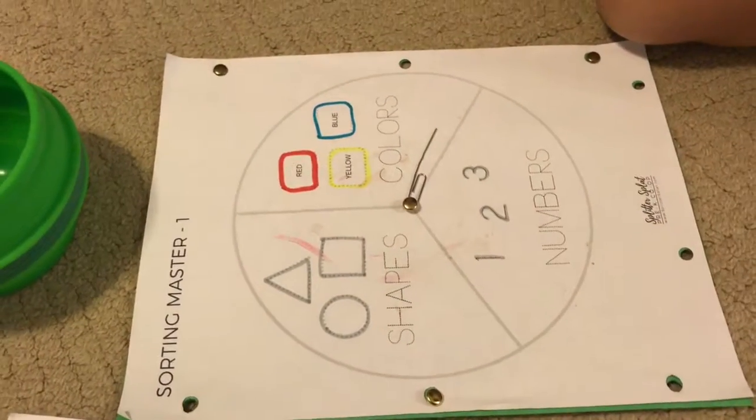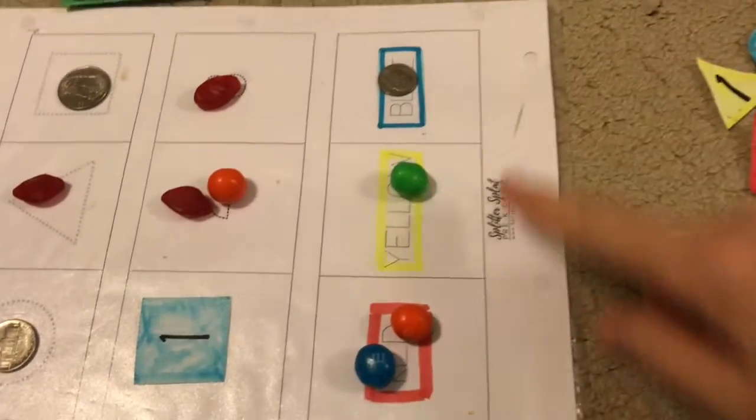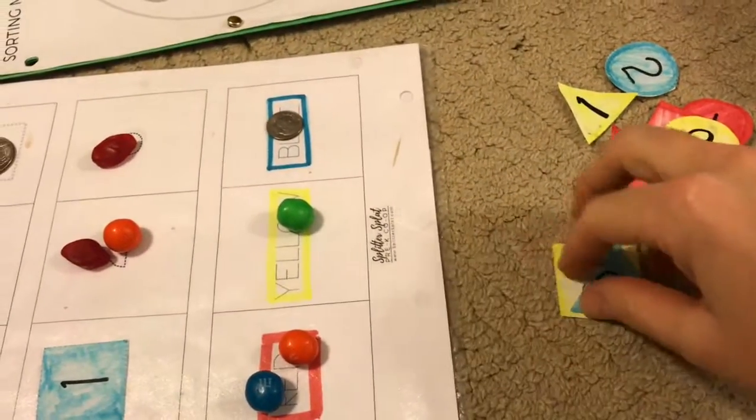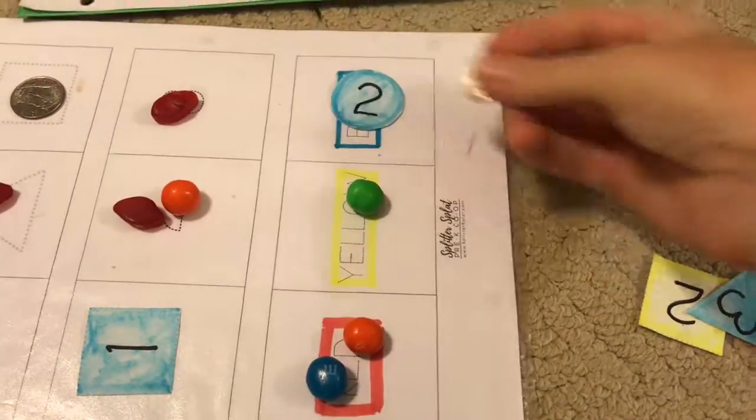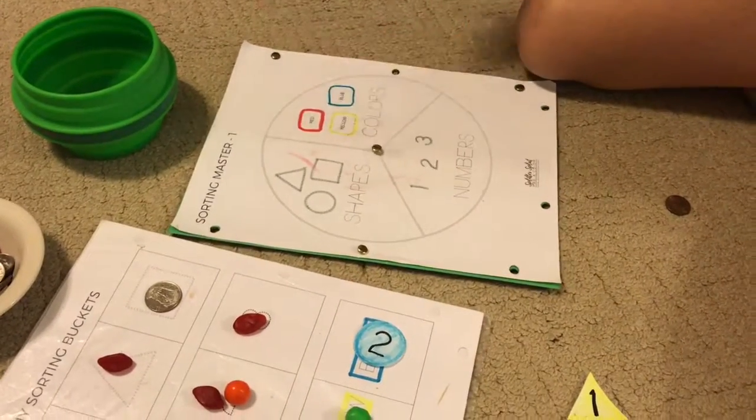So let's do that. Ooh, colors. So I chose colors. Now I want to look at these color buckets here. Which one should I fill? How about blue? So let's keep going a couple more rounds. We'll show them how that works.